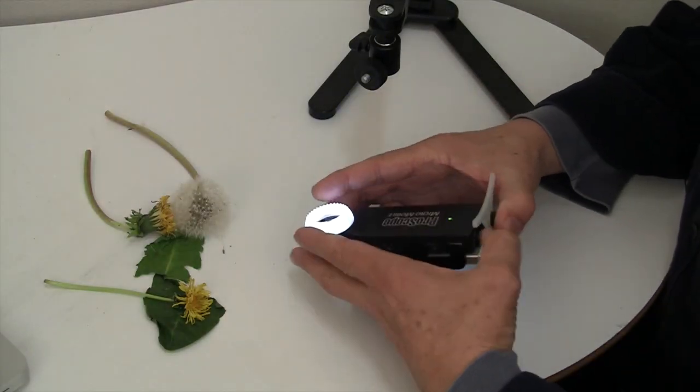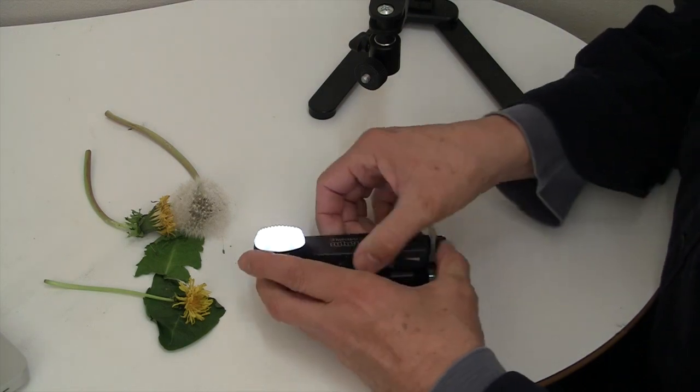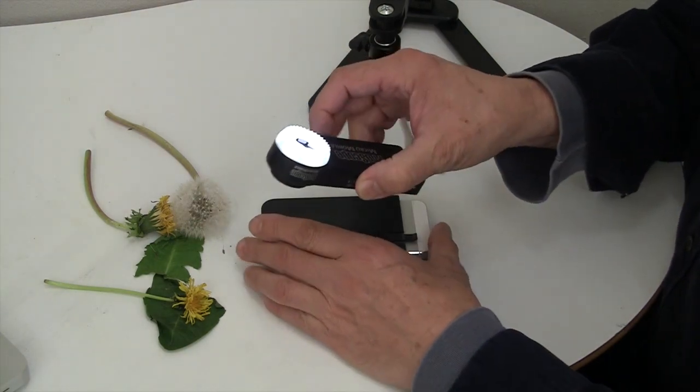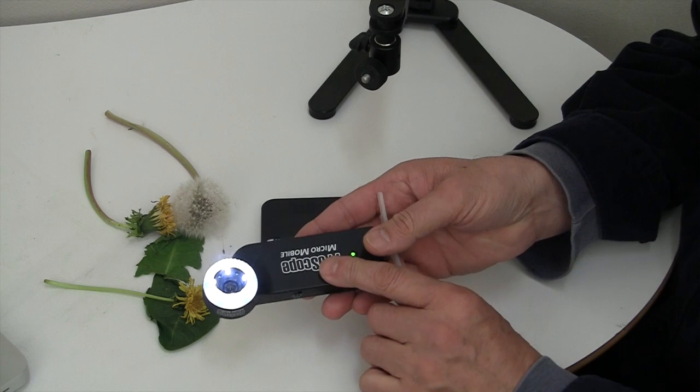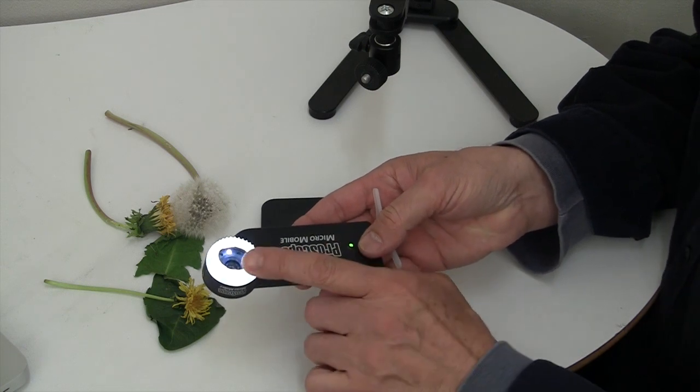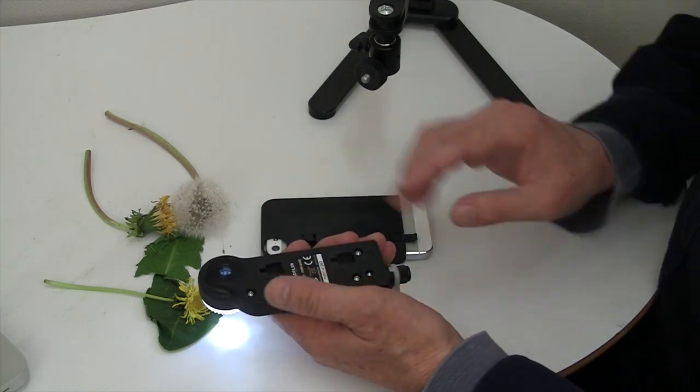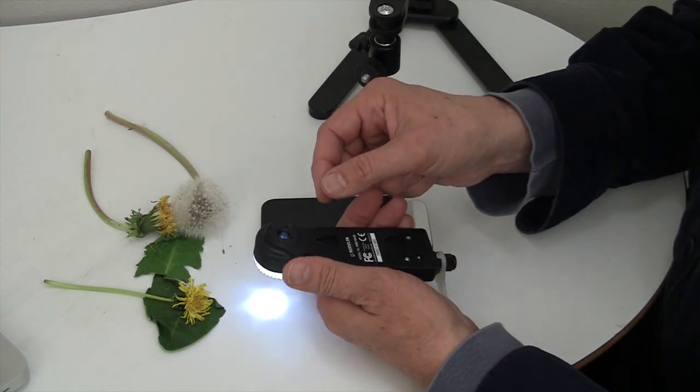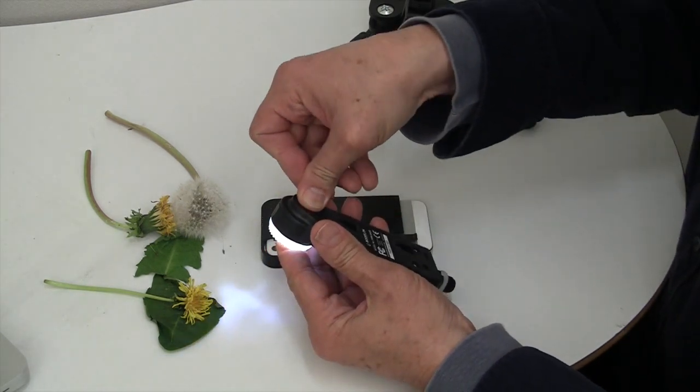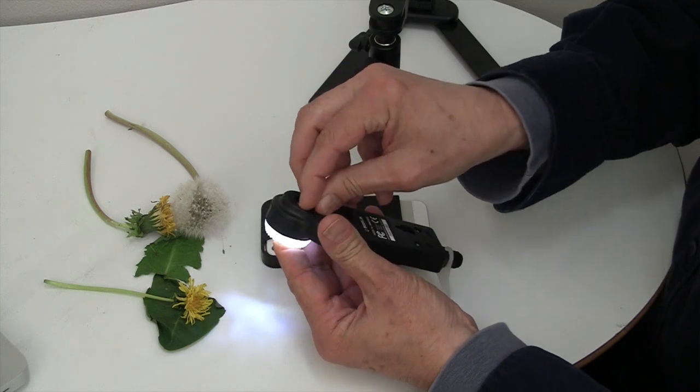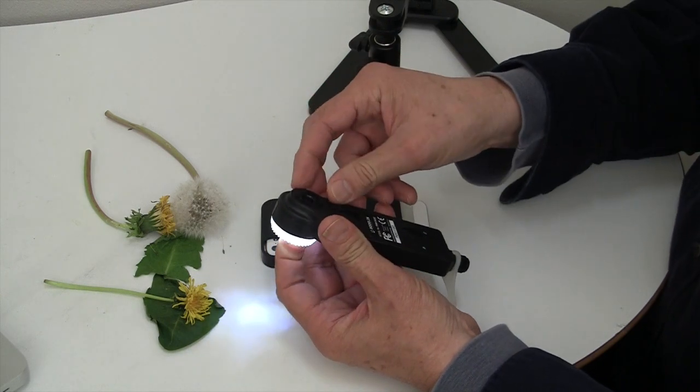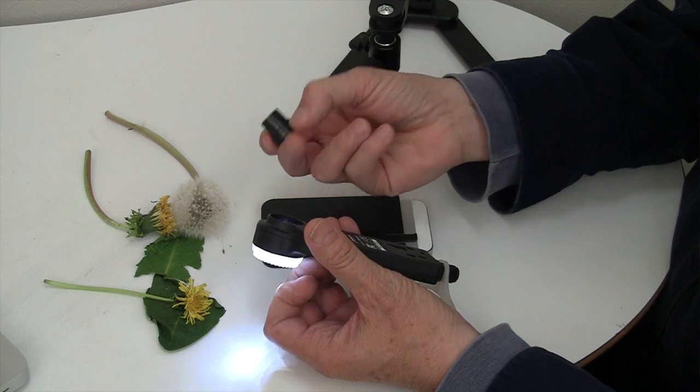Using the ProScope MicroMobile, I can take it off the main sleeve like this. So I'm left with my lithium-ion polymer battery, white LEDs, and of course the lens. But if I want less magnification, all I have to do is remove our lens by turning this counterclockwise and the lens just pops out.